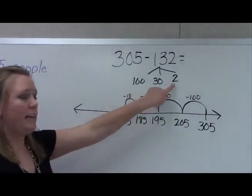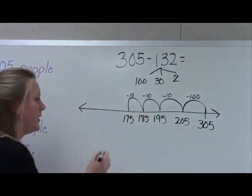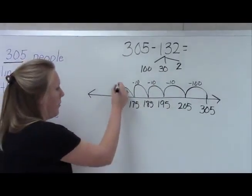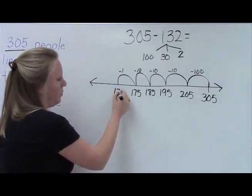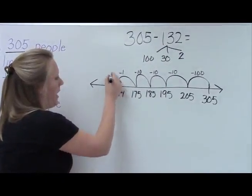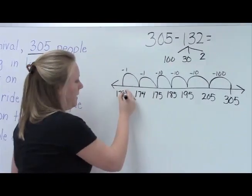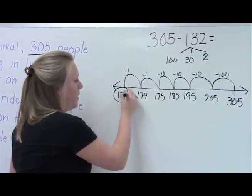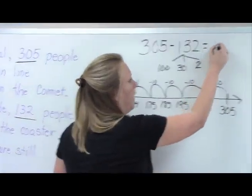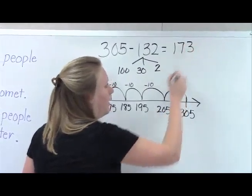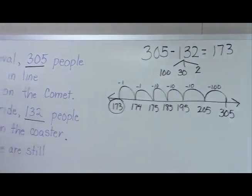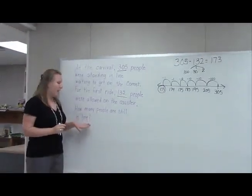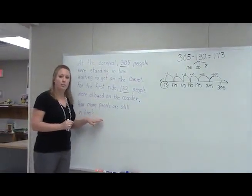So then I need to subtract my two ones. Hop back minus one gives you 174, and then one more, which is 173. So the answer is 173. That means 173 is how many people are still waiting to get onto the roller coaster.